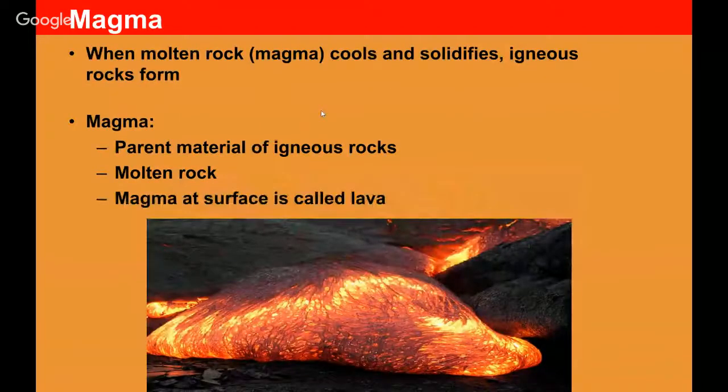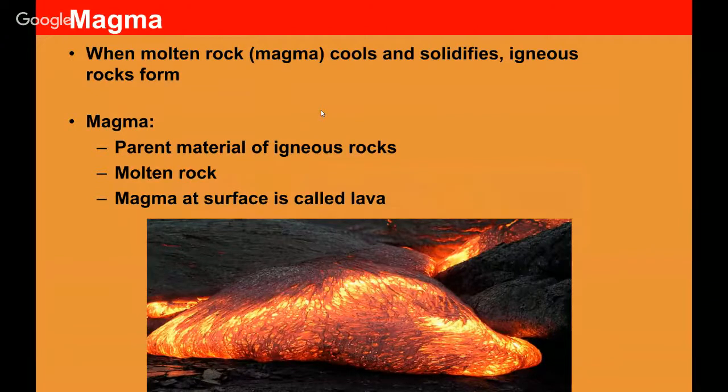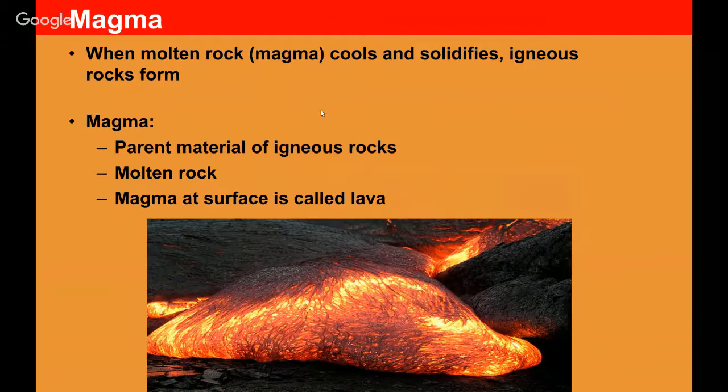Whenever magma cools and solidifies, we get igneous rocks. As mentioned earlier, if that magma, liquid hot magma, makes it to the surface, we call that lava. Magma is essentially just melted rock.